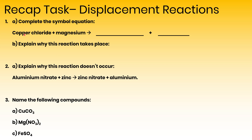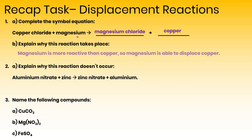To begin with, we've got copper chloride reacting with magnesium. This is a displacement reaction, so magnesium will displace copper from copper chloride to form magnesium chloride, and copper will be displaced and therefore on its own in the products. The explanation is that magnesium is more reactive than copper, so magnesium is able to displace the copper.